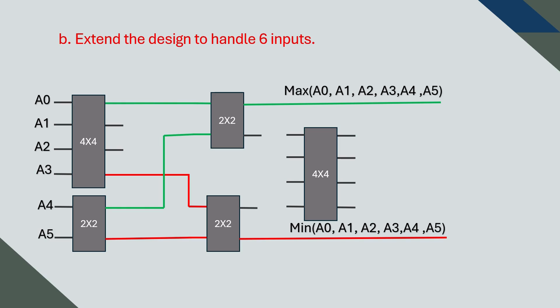We are left with the four middle values which still need sorting. To handle them, we will use the four-input sorter we built earlier. We simply feed these four values into the unit to get them fully sorted.